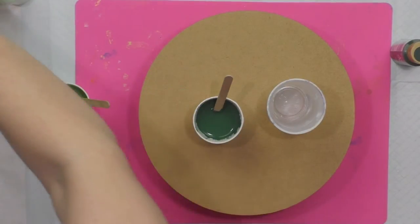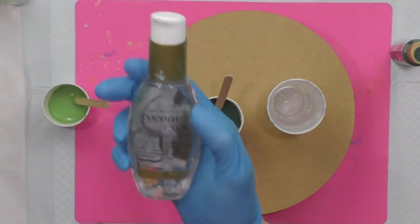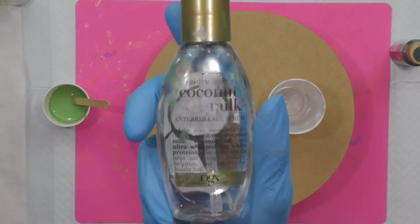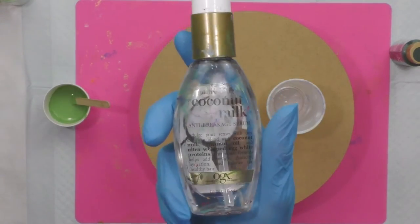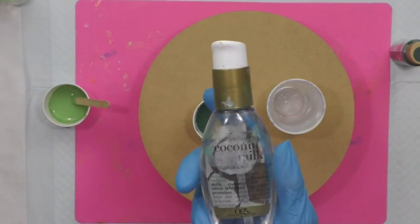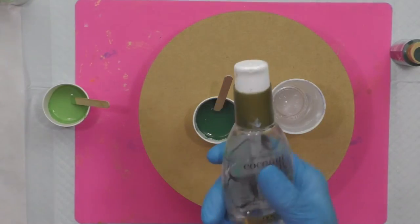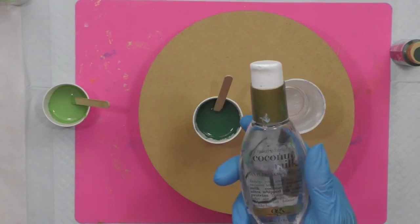I've added OGX to the other colors. I'm using OGX Coconut Milk Anti-Breakage Hair Serum. The specific ingredient in it is Dimethicone as the first ingredient and that's what causes the magic cells.